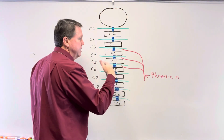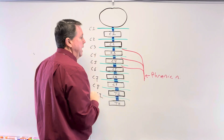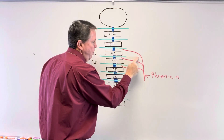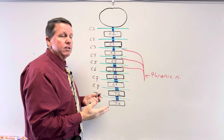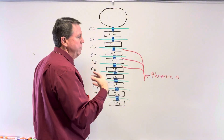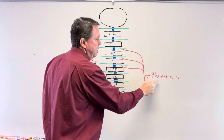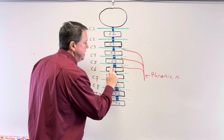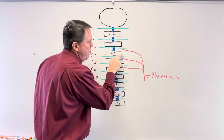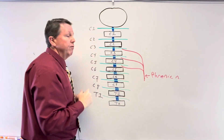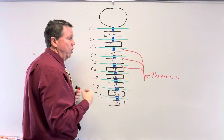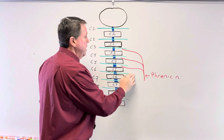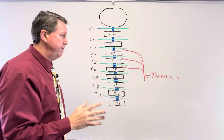If the damage is at C4, the C3 branch of the phrenic nerve is still working, so there's a better chance of survival — but the person would still probably need a respirator, since C4 is the main branch innervating the diaphragm. At C5 injury, both the C3 and C4 branches are still supplying nerve flow to the diaphragm, so there's a better chance of survival and the person could likely breathe on their own.